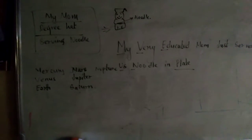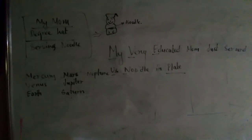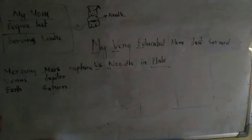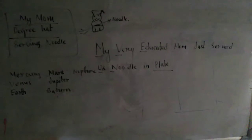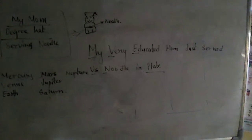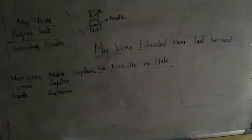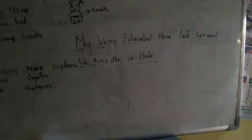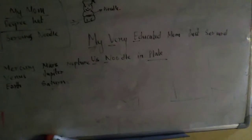If you imagine that, then you can make a sentence like 'My Very Educated Mom Just Solved Us All' — where 'My' means your mom, 'Very Educated' means she has a degree hat, and she just solved you all noodles.